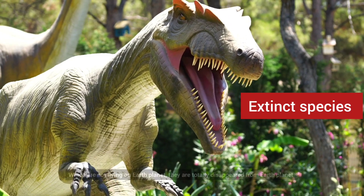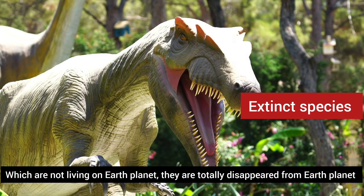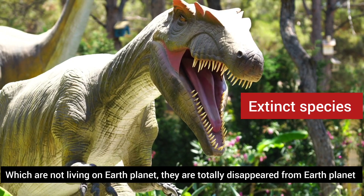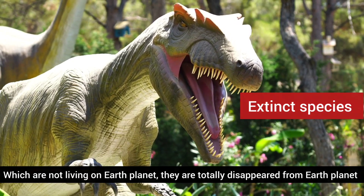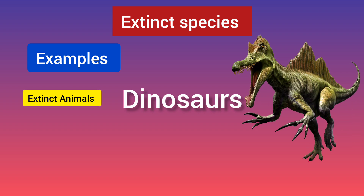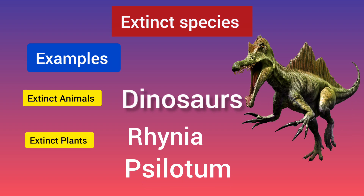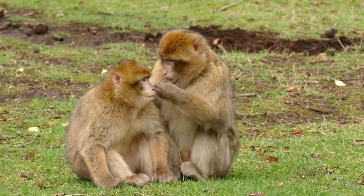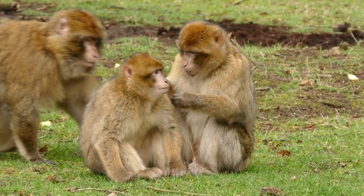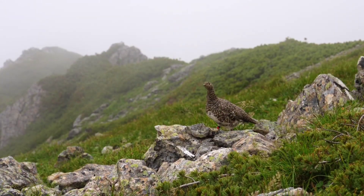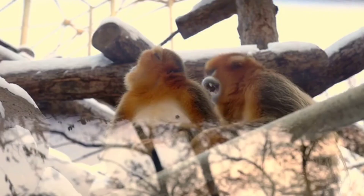Extinct are those species which are not living on the earth planet — they have totally disappeared from the earth. For example, dinosaurs, and in plants, rinia siloto. There are more chances to protect the endangered species, and there are impossible chances to protect the extinct creatures.